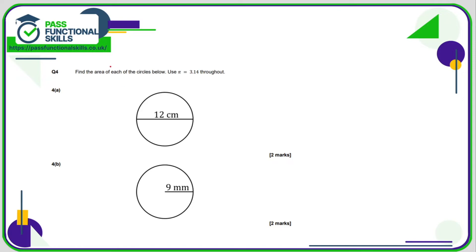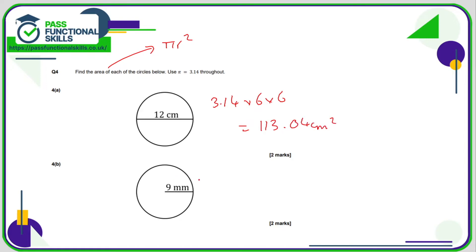Question 4, we want the area — pi r squared. Here we've got a diameter of 12, so the radius is 6: 3.14 times 6 times 6 gives 113.04 square centimetres. B is simply 3.14 times 9 times 9, which comes to 254.34 square millimetres.